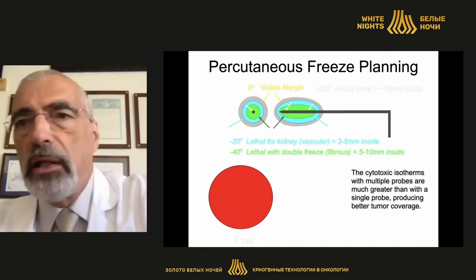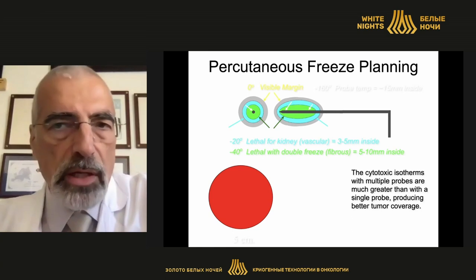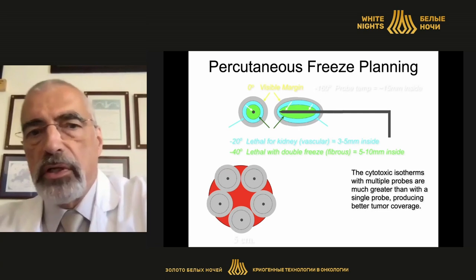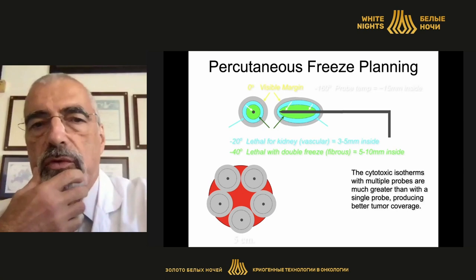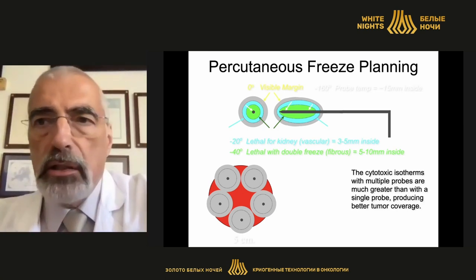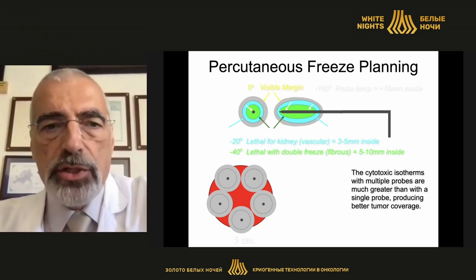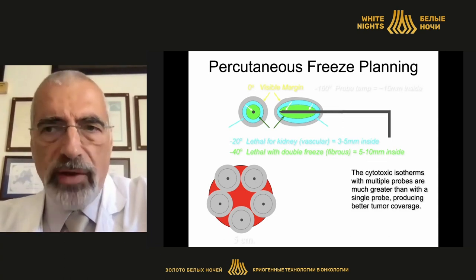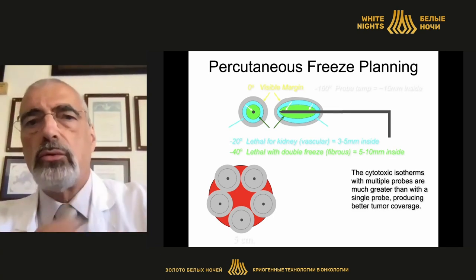But we know that to ablate properly, we need a cold isotherm. Without that, the ablation will not be good. So we have to use several cryoprobes if we want to ablate larger areas of tissues. And this, of course, is also a little bit complicated. You need experience, you need to know very well the technology that you use. Each technology in the cryoablation field has its own advantages and disadvantages.